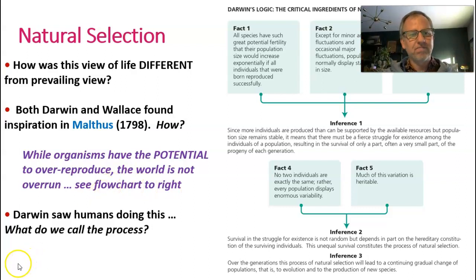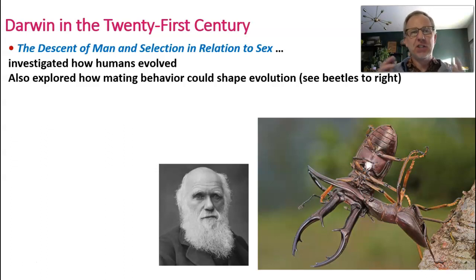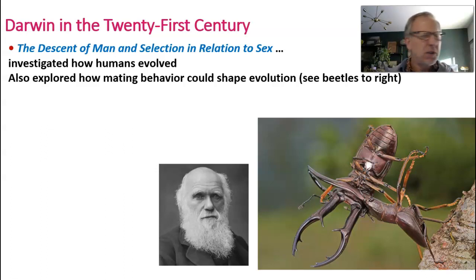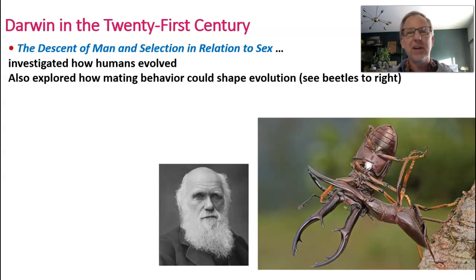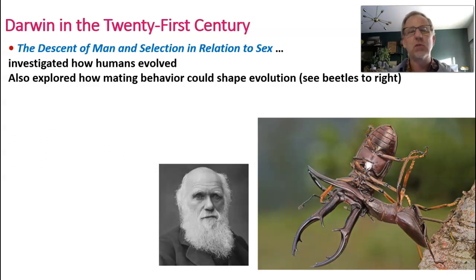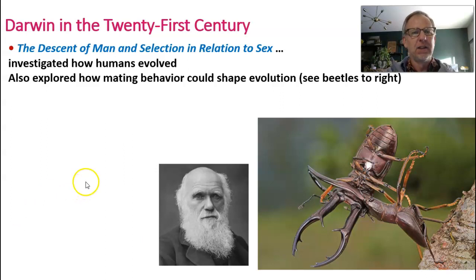Here we are near the end of Chapter 2, looking at Darwin in the 21st century. Darwin's book 'The Descent of Man and Selection in Relation to Sex,' published around 1872, investigated how humans evolved and explored how mating behaviors could shape evolution — like male beetles fighting each other for access to females. These kinds of behaviors shape the way species evolve, leading to sexual selection, which is a spin-off of natural selection that we'll get to in a later chapter.